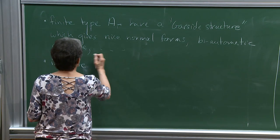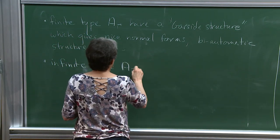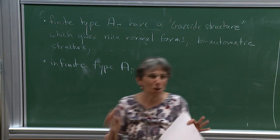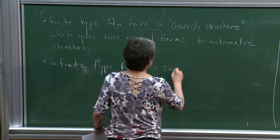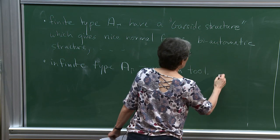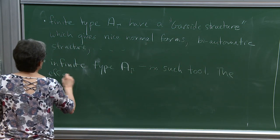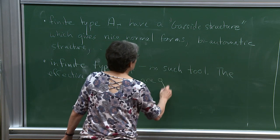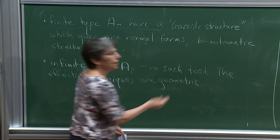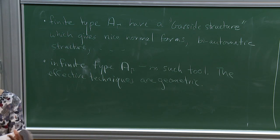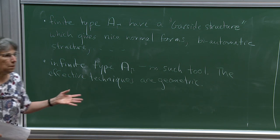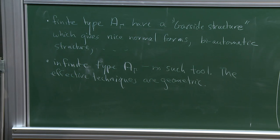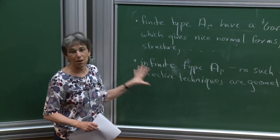For infinite type Artin Groups, there's essentially no Garside structure. John McCammond has generalized Garside structures a little to some affine ones, but basically there's no such tool. However, the most effective techniques we've had so far for studying these are geometric techniques - constructing interesting, useful complexes that these things act on and using those to tell us something about the group. That's what my second lecture will be about.